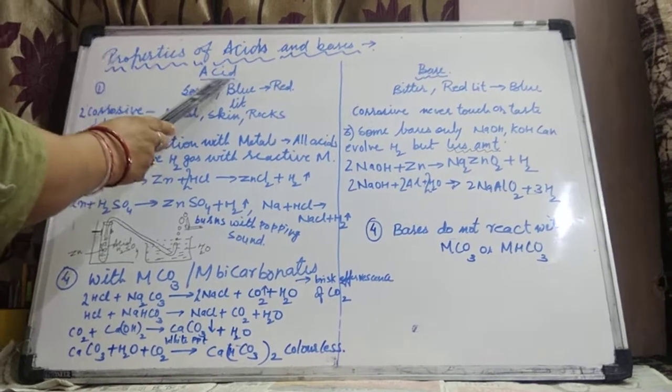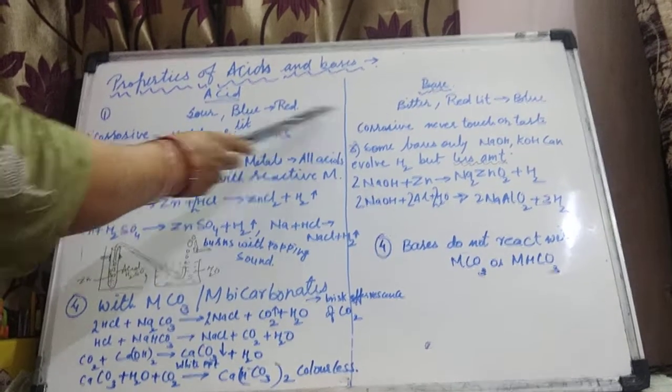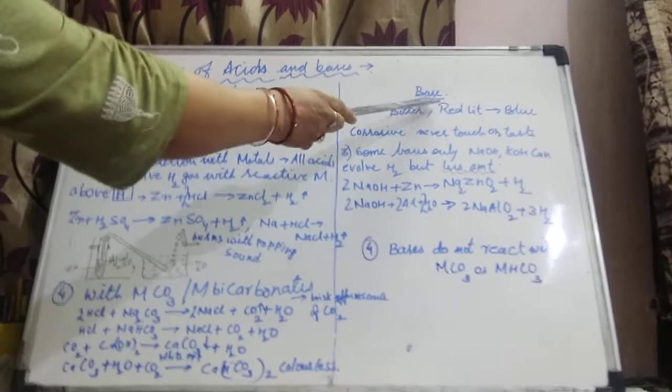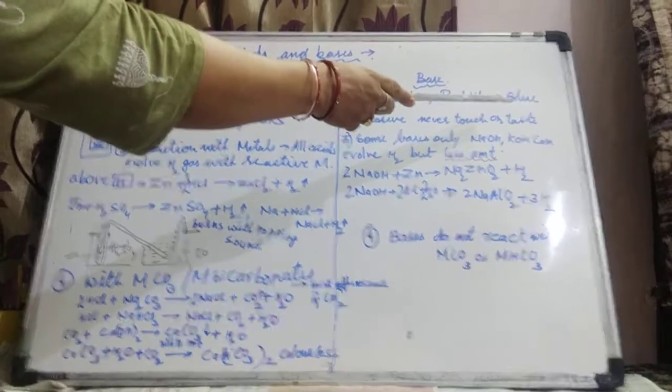Acid converts blue litmus to red, while base converts red litmus to yellow.